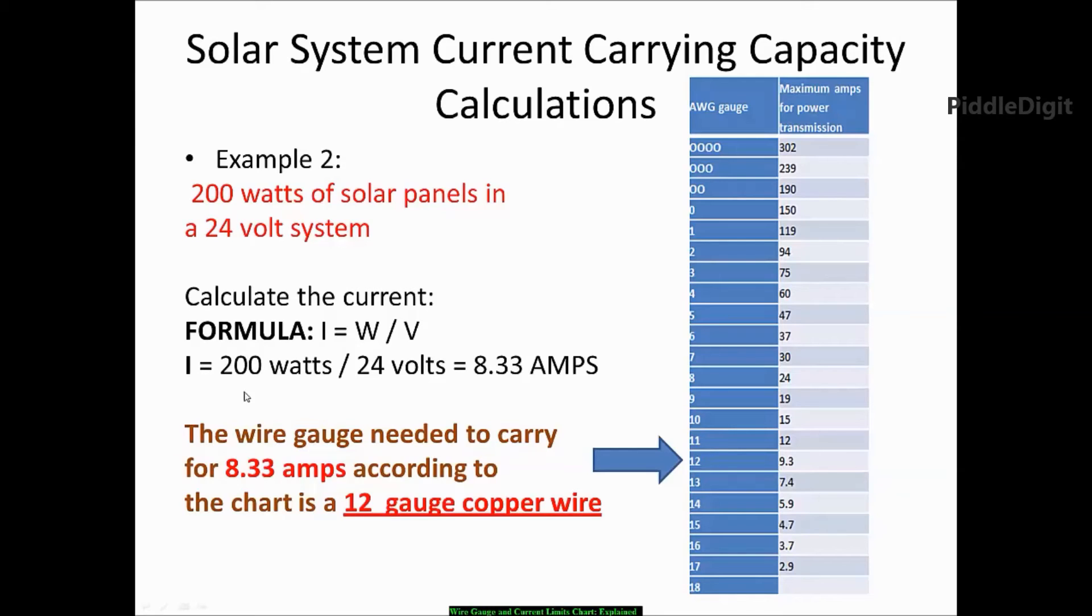So 200 divided by 24 equals 8.33 amps. If we reference the wire gauge and current limit chart, 8.33 amps is not on the chart. I see 7.4 and 9.3. Now, because 8.33 amps is greater than 7.4 amps, we will go up to the next value.